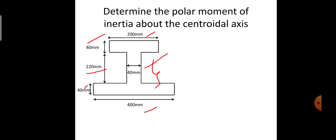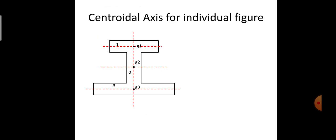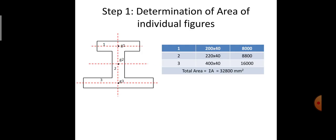We need to determine the polar moment of inertia about the X and Y axis. The individual centroidal axes are represented by red color dotted lines. I have divided the overall I-section into three individual rectangles: 1, 2, and 3, whose individual centroids are G1, G2, and G3. The red dotted lines pass through the individual centroids, so they are called the centroidal axis for the individual figures.